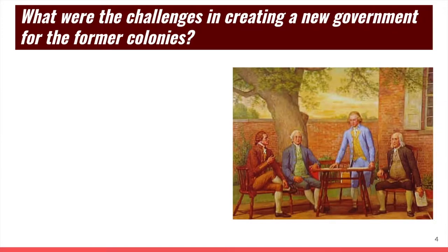Our first left-side question in this lesson is: what were the challenges in creating a new government for the former colonies? Just to refresh your memory, at this point we fought the Revolution — we had a war against the British. Although we didn't learn about the details of the war, we eventually won with the help of France, and at the end of that we earned the right to be our own country and to govern ourselves. But the question is, what was that government going to look like? Were we going to live under a king or queen of our own? Because we kicked out the British and the King of England, so we had to come up with our own system for governing ourselves.